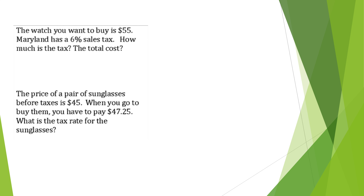Here are a couple of percent word problems. The first one is a two-step problem: you have to figure out what the tax is, then the total cost. The percent is clearly 6%. The watch costs 55 dollars — is that the whole cost or part of the cost? That's the whole cost, so it goes in the whole place at the bottom. What we're looking for is the tax, which is a part of the price.